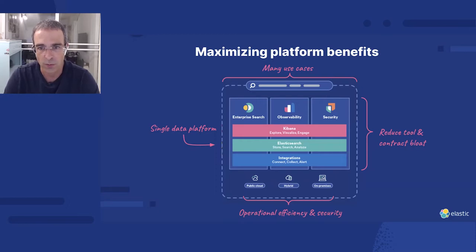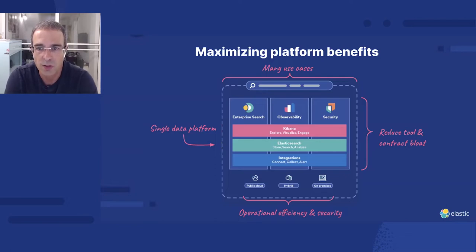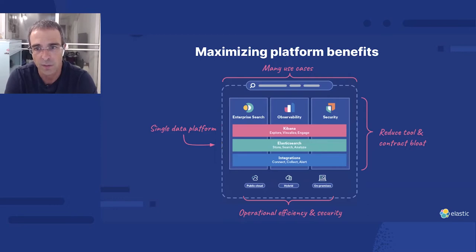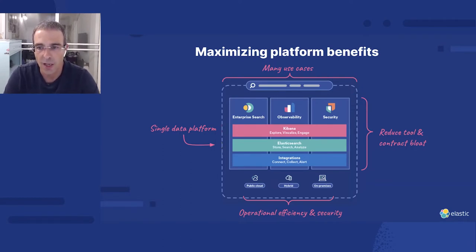It also means you can view the same data through different lenses — for example, your web server access logs, which you can use to troubleshoot the health of your web server, but also to identify login attacks on that service. Having a single platform is also critical from an operational perspective. There are fewer components to manage, which makes your system drastically less complex to operate. It also matters to buyers and executives — reducing tool sprawl means spending less time and money, and fewer contracts to negotiate.